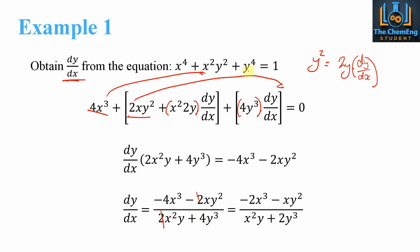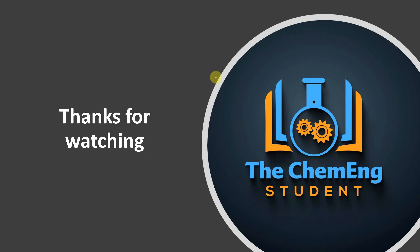To summarize: if you encounter implicit differentiation and you have a y term that you want to express with respect to x, treat it as a chain rule. If you have an x term multiplied by a y term and you are differentiating implicitly, you have a product rule. That's the end of this lesson — thanks for watching. If you liked this video, please like and subscribe to the channel to help us reach as many chemical engineering students as possible.